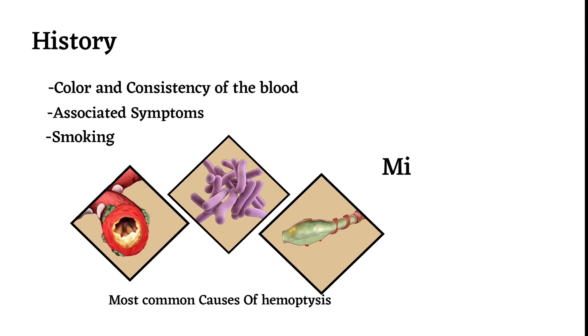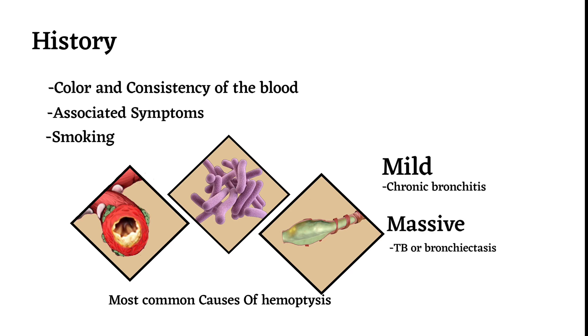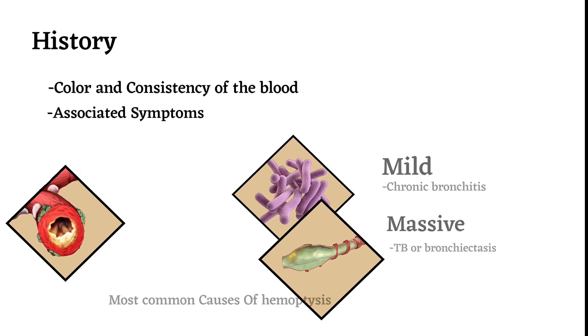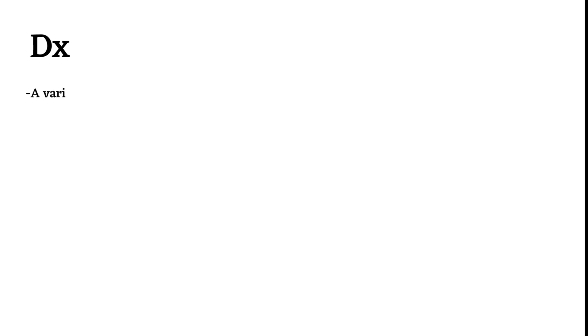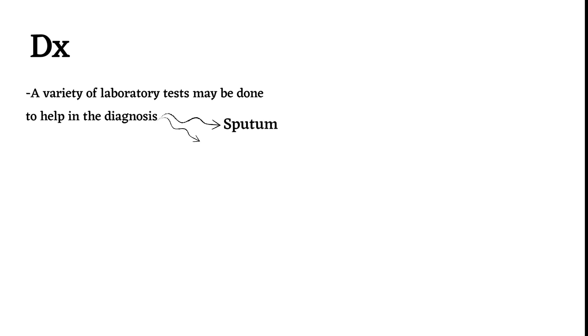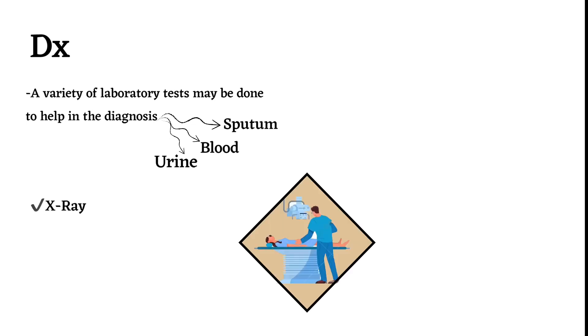If the hemoptysis is mild, it is an indication of chronic bronchitis, and if it is massive, it is an indication of tuberculosis or bronchiectasis. For diagnostic testing, a variety of laboratory tests may be done to help in the diagnosis, usually involving sputum, blood, and urine. Other diagnostic tools include X-ray and CT scan.